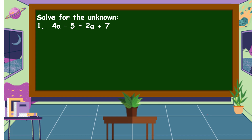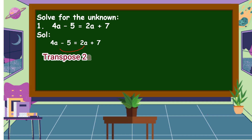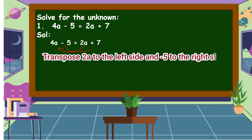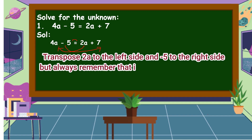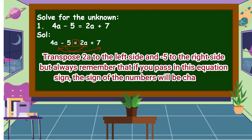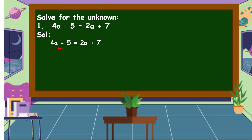We are going to use the same equation, but this time I will teach you another solution. Since our purpose is to combine like terms, we can do it directly by transposing. We transpose 2A to the left side and negative 5 to the right side. Always remember that when a term passes through the equation sign, its sign changes.